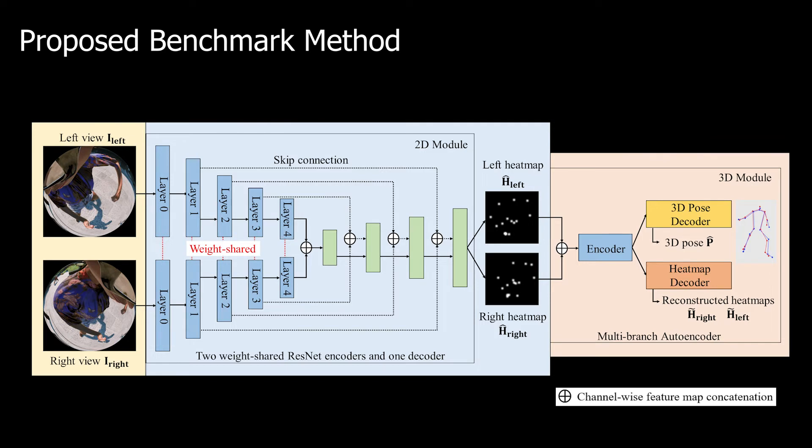The estimated heat maps are further processed in the 3D module. The 3D module first encodes the heat maps to get embedding features, which are used in two decoder branches. The first branch is a 3D pose branch, which outputs the final 3D pose. The second branch is a heat map branch, which tries to reconstruct the predicted 2D heat maps, so that the network can capture the uncertainty of the heat maps. Then we train each module separately.